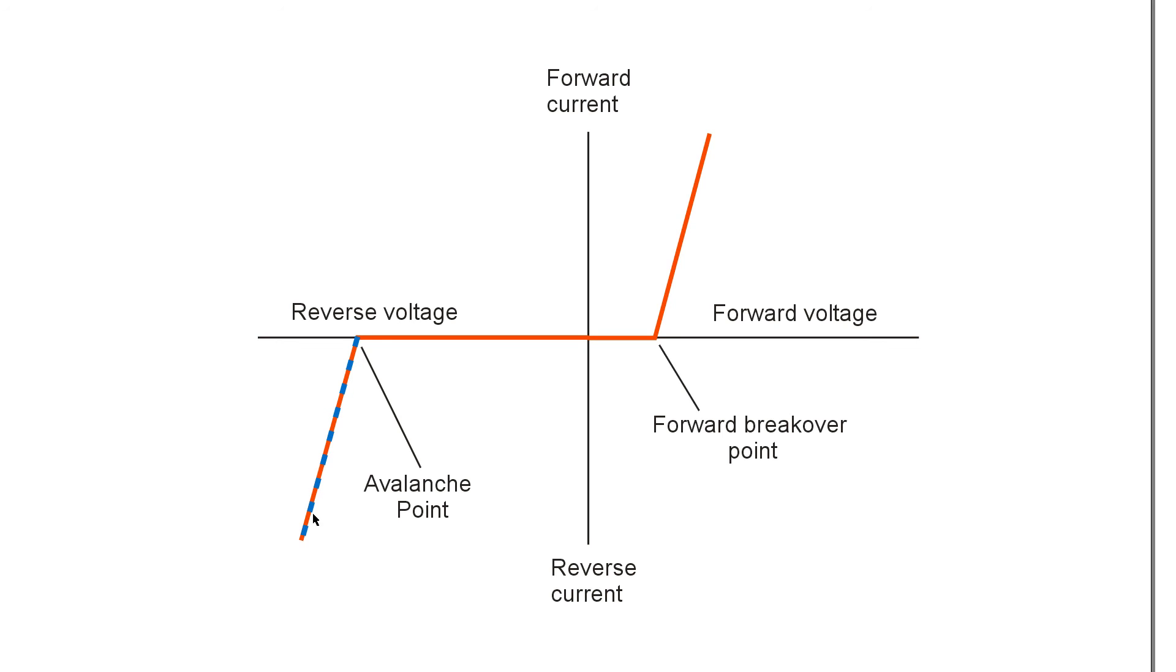So that's what's meant by avalanche effect: a reverse bias voltage on a semiconductor diode that is so high that the diode conducts in the reverse direction. Avalanche effect.